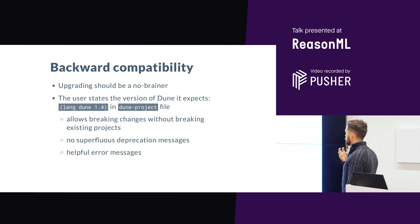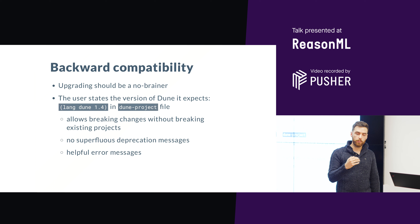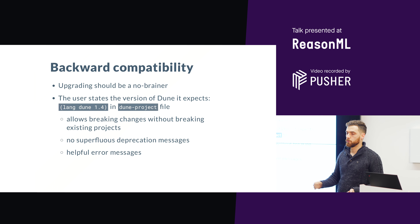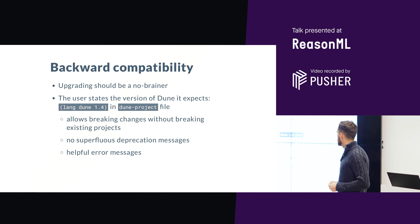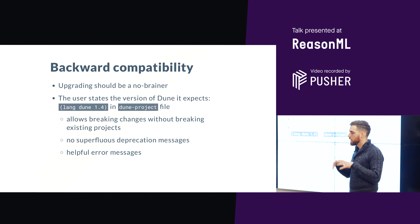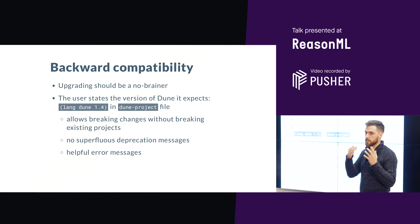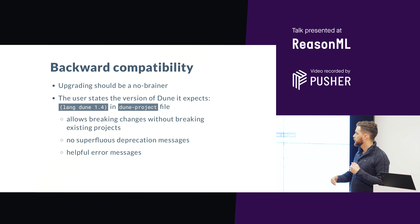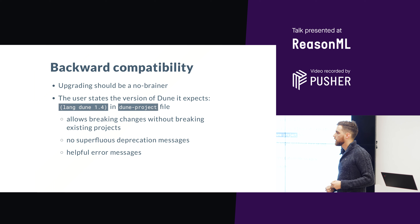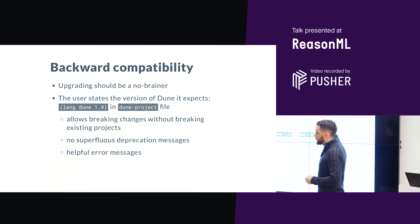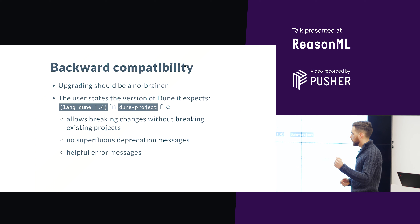Secondly, we attach a lot of importance to backward compatibility — we want upgrading to be a no-brainer. If someone has a problem with Dune 1.3 and we fix it in Dune 1.4, we can just say 'upgrade'. Dune started as jbuilder and was renamed to Dune, and when we did the renaming we changed not only the name but many other things — the configuration file name, the syntax inside, etc. But today, with the latest version of Dune, you can still build a project released using the very original version of jbuilder, because we provide full backward compatibility.